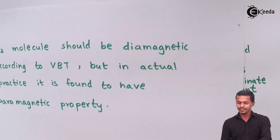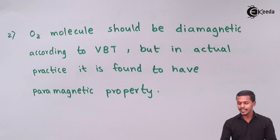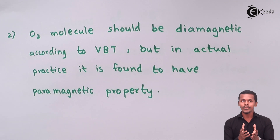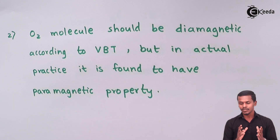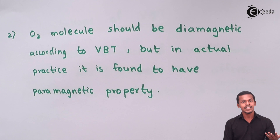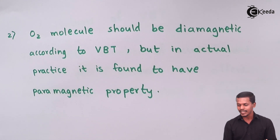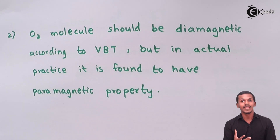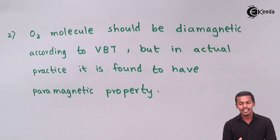The next limitation concerns the oxygen molecule. According to VBT, O₂ should be diamagnetic, because during the bond formation of oxygen with oxygen, no unpaired electrons remain. Therefore it should not be paramagnetic. However, it has actually been found that O₂ is paramagnetic in nature. Paramagnetic behavior arises when there is at least one unpaired electron with a particular spin. This feature was not explained by VBT, which was a significant drawback.